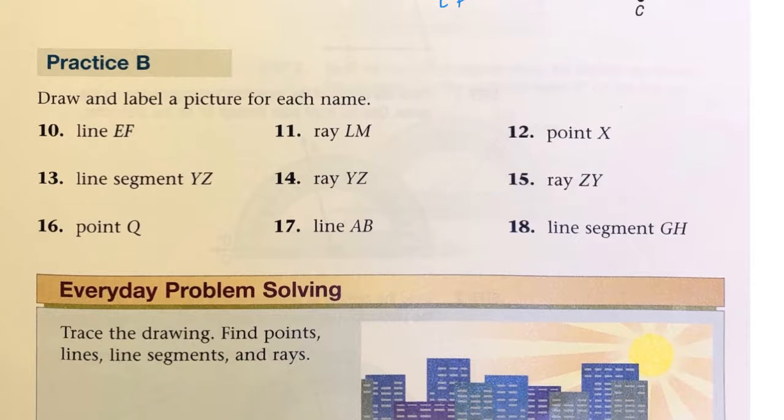We could practice drawing and labeling a picture for each of these. So, here we have a line EF for number 10. We can draw a line. And we put the arrows on each end. And we can make dots and label each point. So, there's a line for EF.